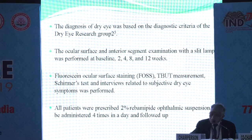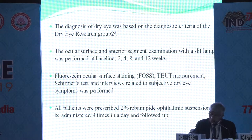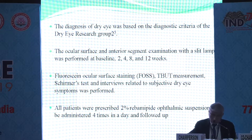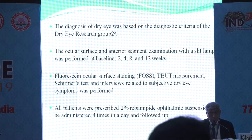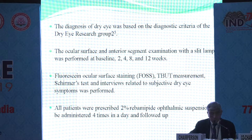The diagnosis of dry eye was based on the diagnostic criteria of the Dry Eye Research Group. Complete ocular surface examination and anterior segment examination was done with slit lamp. At baseline, 2 weeks, 4 weeks, 8 weeks, and 12 weeks follow-up was done. TBUT measurement, Schirmer test, and dry eye symptom scores were performed. All patients were prescribed 2% ophthalmic suspension to be administered 4 times a day and follow-up was made.